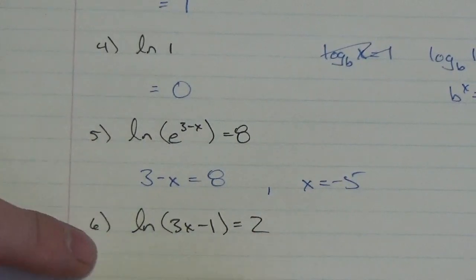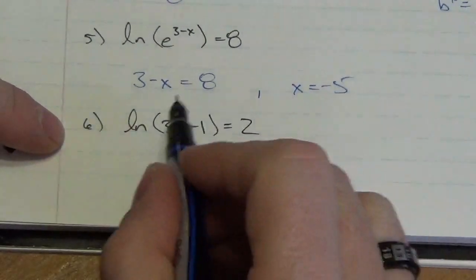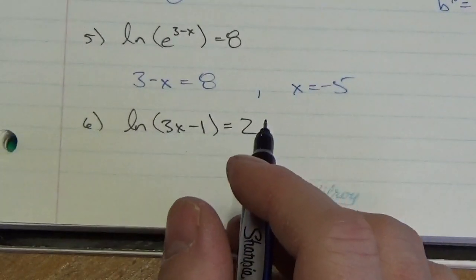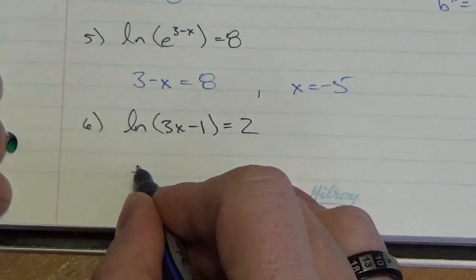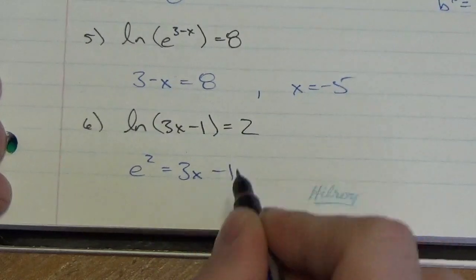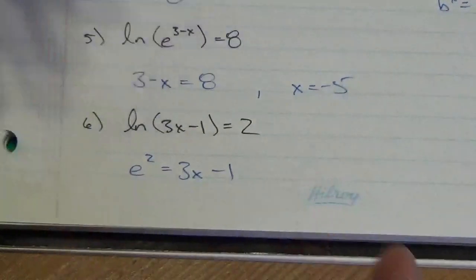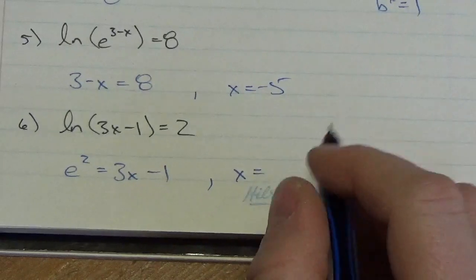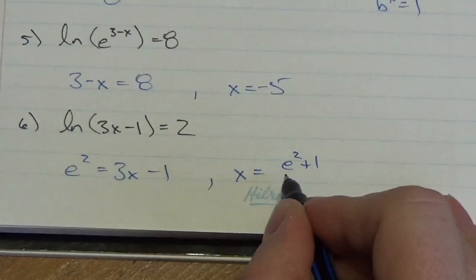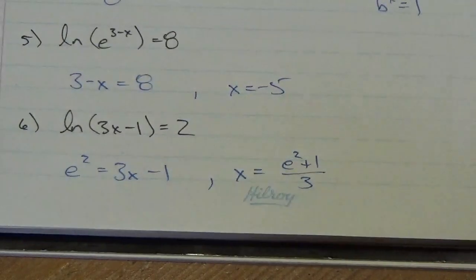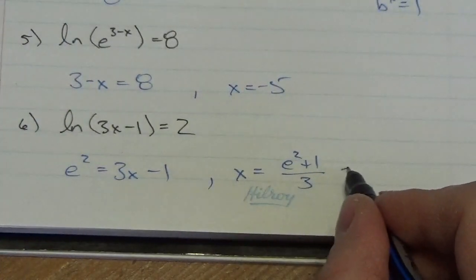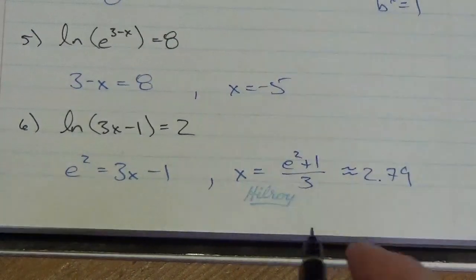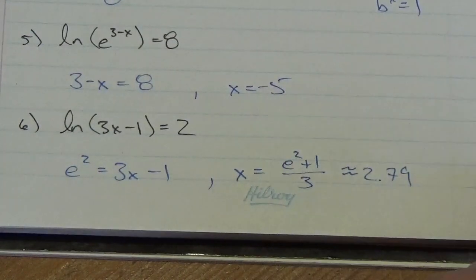This next one is more along the lines of a real logarithmic equation because the unknown is in the argument of the logarithm. If I convert ln(3x minus 1) equals 2 into exponential form, this becomes e squared equals 3x minus 1. To solve, I add 1 to both sides and divide by 3, so x equals (e squared plus 1) divided by 3. I can determine that's approximately equal to 2.79, or I could leave it in exact form.